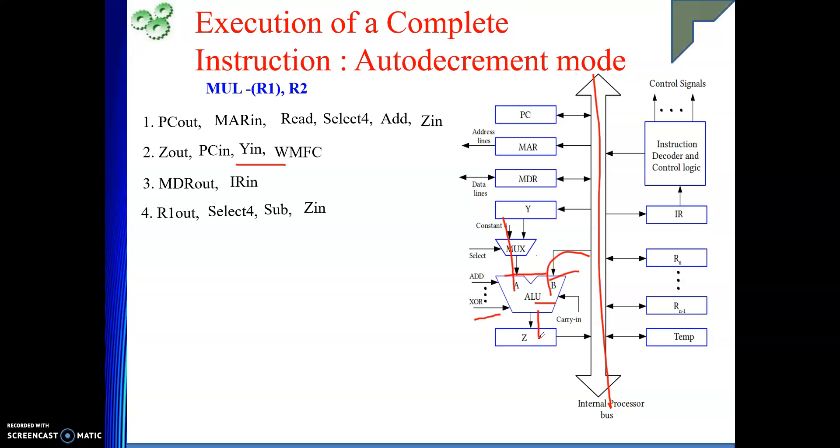Now, from Z in, where the value will go? To your MAR. Then only the address will be given to memory. Because here my memory is connected. As well as it will go to R1 also. Because R1 will see the changes. Z out. I can't do Z out here. Because R1 out is already done in that state. Z out, R1 in, as well as MAR in. Address is given to the memory.